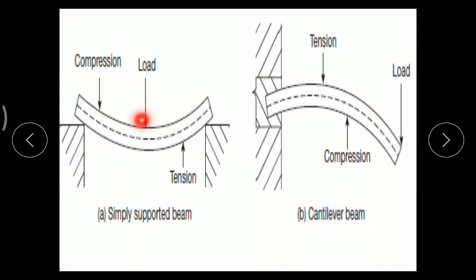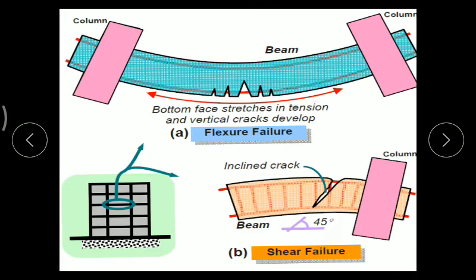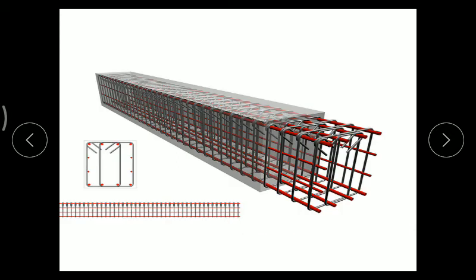Due to the applied load in a simply supported beam, tension occurs at the soffit — that is, at the bottom fiber — and compression at the top fiber. In the case of a cantilever beam, there will be tension at the top fiber and compression at the bottom fiber. Where there is tension, we provide reinforcement steel. This is typical flexural failure with flexural cracks. Due to shear, there are shear cracks, and to take care of shear we provide stirrups — these are loop-like structures of steel.